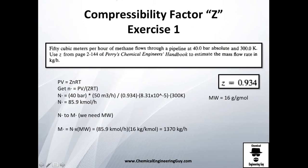Let's see: 50 cubic meters per hour of methane flows through a pipeline at this pressure and this temperature. They tell you go and find out Z value from this book, which you don't need to - I already got it, it's 0.934 - to estimate the mass flow rate of that flow.